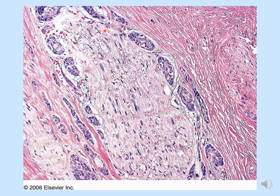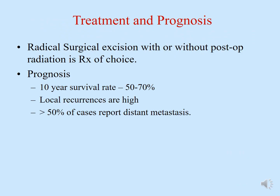A histopathological slide clearly shows a nerve bundle and perineural invasion — tumor cells have invaded the perineural space and travel through the perineural sheath to spread and give rise to newer tumors in distant locations, which is why this tumor has a very poor prognosis. Treatment is radical surgical excision with or without post-operative radiation. The 10-year survival rate is reported at 50–70%. Local recurrences are high due to perineural invasion, and greater than 50% of cases show distant metastasis, further reducing survival.